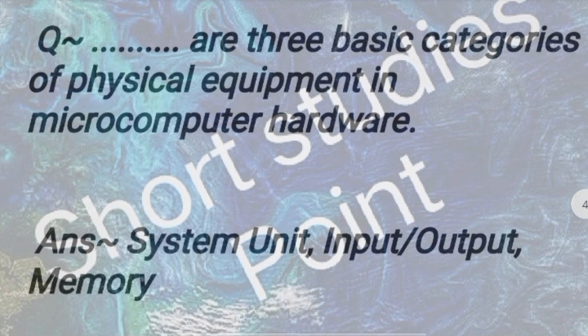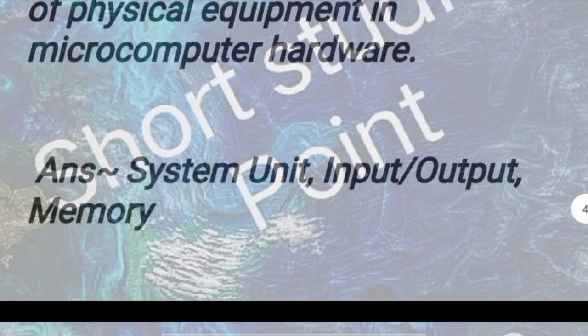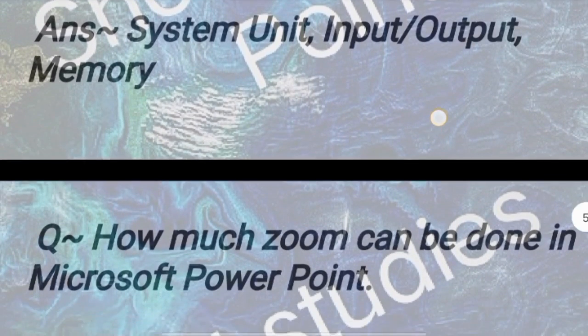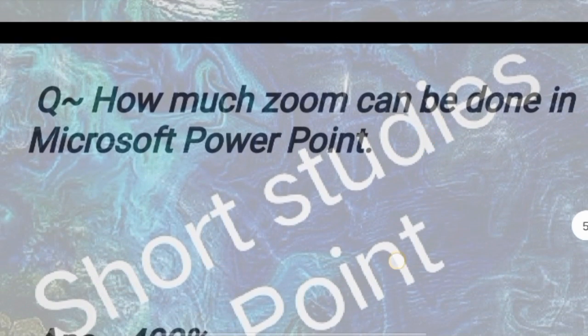Question: What are the three basic categories of physical equipment in microcomputer hardware? Answer: System unit, input and output, and memory. Next question.